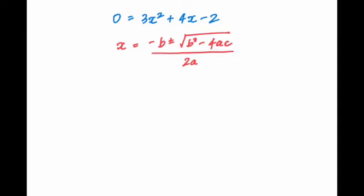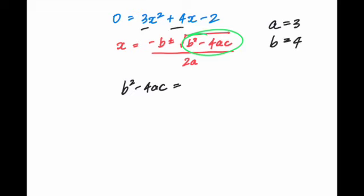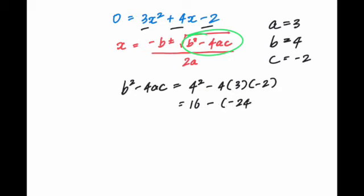The key component is the discriminant inside the square root — we need to determine if it's positive, zero, or negative. Here, a equals 3 (the coefficient of x squared), b equals 4 (the coefficient of x), and c equals negative 2 (the constant). Substituting in: 4 squared minus 4 times 3 times negative 2, which gives 16 minus negative 24, resulting in positive 40.